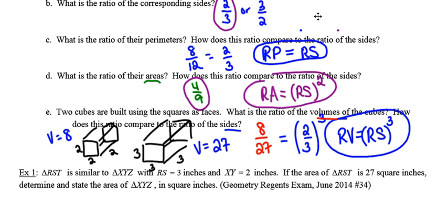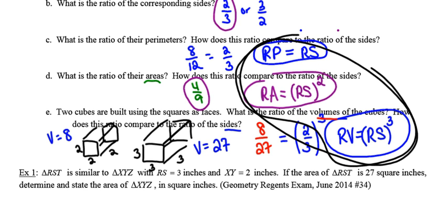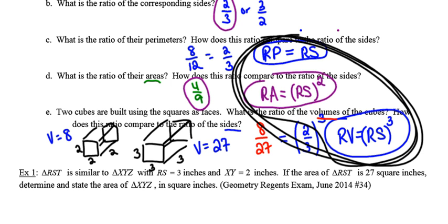What this means is that every problem now has three ratios, and you're going to write down those three ratios every single time. Once you've written down those three ratios, you decide which one is going to be most helpful in solving what is requested in the problem. But again — every problem, every time — write the three ratios down.